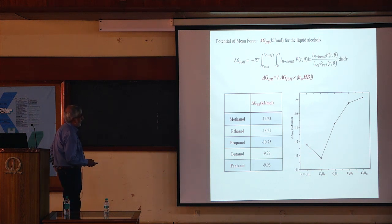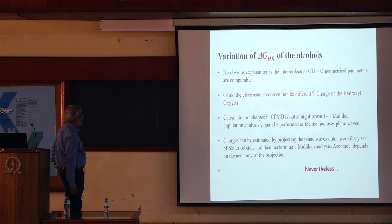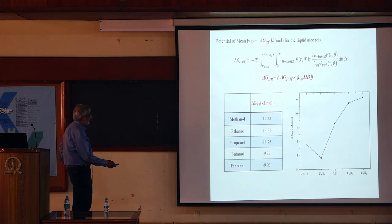This raises a couple of questions. Why do we observe this variation? There is no obvious explanation since the intermolecular O–H–O geometrical parameters are comparable across the alcohols.